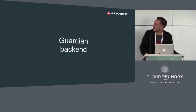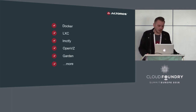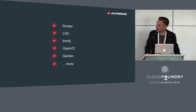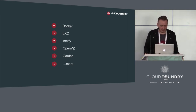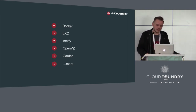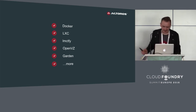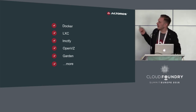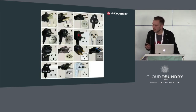The last backend available is called Guardian. Why the need for another Linux container backend? There are plenty of container implementations nowadays — Docker, LXC, which has been around for years, a container implementation from Google, OpenVZ, Garden, and many more — which are not compatible with each other.